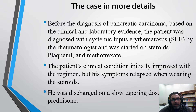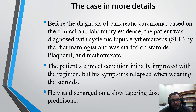Before the diagnosis of pancreatic carcinoma, based on the clinical and laboratory evidence, the patient was diagnosed with systemic lupus erythematosus by the rheumatologist and was started on steroids, hydroxychloroquine, and methotrexate. The patient's clinical condition initially improved with this regimen but symptoms relapsed when weaning the steroids. He was discharged on a slow-tapering dose of prednisolone.